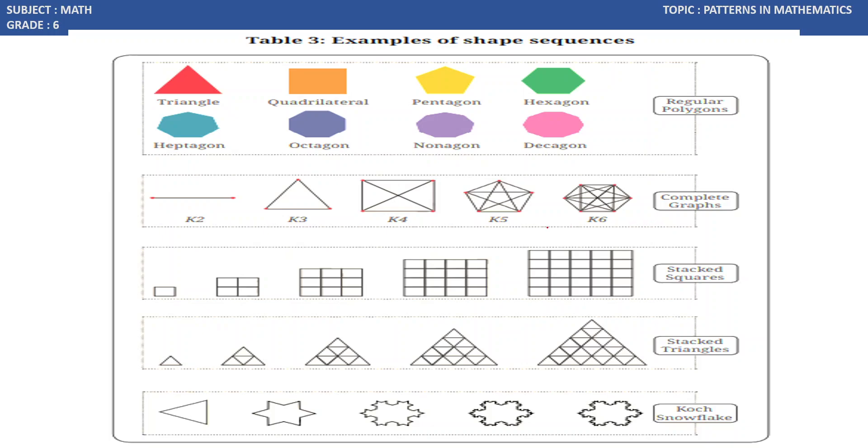And the complete graphs are having these lines and this joining these vertices of each polygon. Similarly, stacked squares are a group of squares. Stacked triangles are a group of triangles. Koch snowflake is in the form of the sides which will be having each side easing to this, 4 and subdivided into 4 lines. 1, 2, 3, 4.